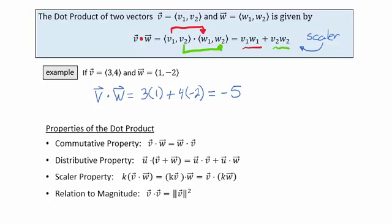Some of the properties of the dot product that we want to be familiar with are: the commutative property, which says that v dotted with w is the same as w dotted with v — the order that we dot the two vectors does not matter. Or the distributive property: if we have a vector u being dotted with the sum of two vectors, we can distribute the dot product of u to each of the inside vectors. Or there's the scalar property that says if you have a scalar times a dot product, we can distribute the scalar to either the first vector or the second vector, but not both.